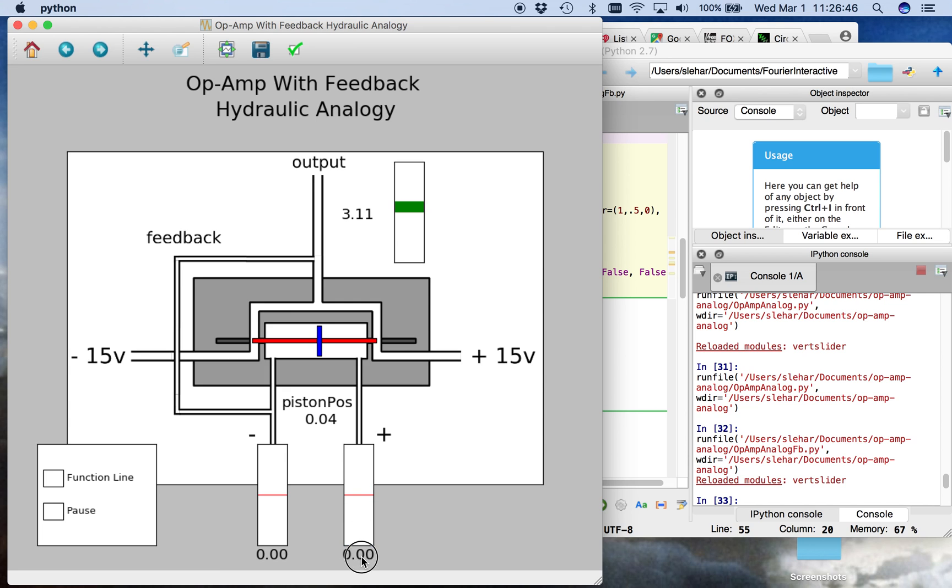And if we make the non-inverting input zero, now this is a negative follower. It will follow the negative of the voltage on the inverting input. So that's the purpose of the op-amp.